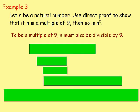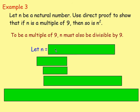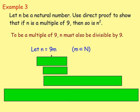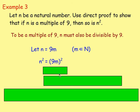Example 3: let N be a natural number. Use direct proof to show that if N is a multiple of 9, then so is N squared. To be a multiple of 9, N must be divisible by 9, which means we let N equal 9M, where M is a natural number. N squared is what we're looking at — if N equals 9M, then N squared equals 9M all squared. We would have 9M times 9M: 9 times 9 is 81, and M times M gives M squared.